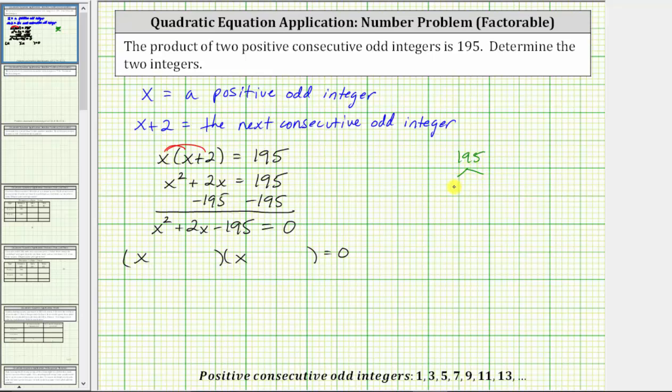195 is equal to five times 39. Five is prime. 39 is equal to three times 13, both of which are prime. We now know the prime factorization of 195 is equal to three times five times 13.